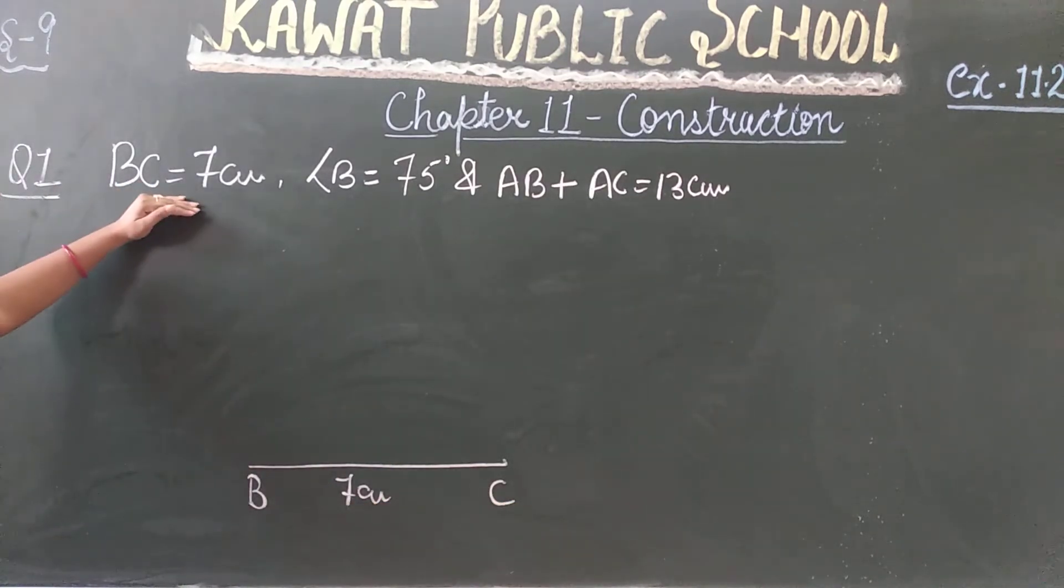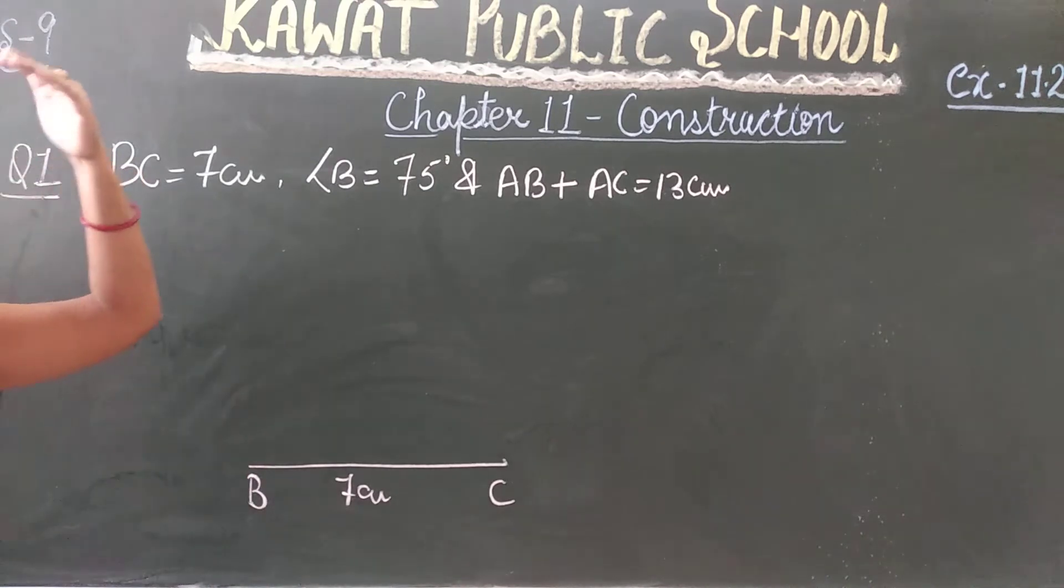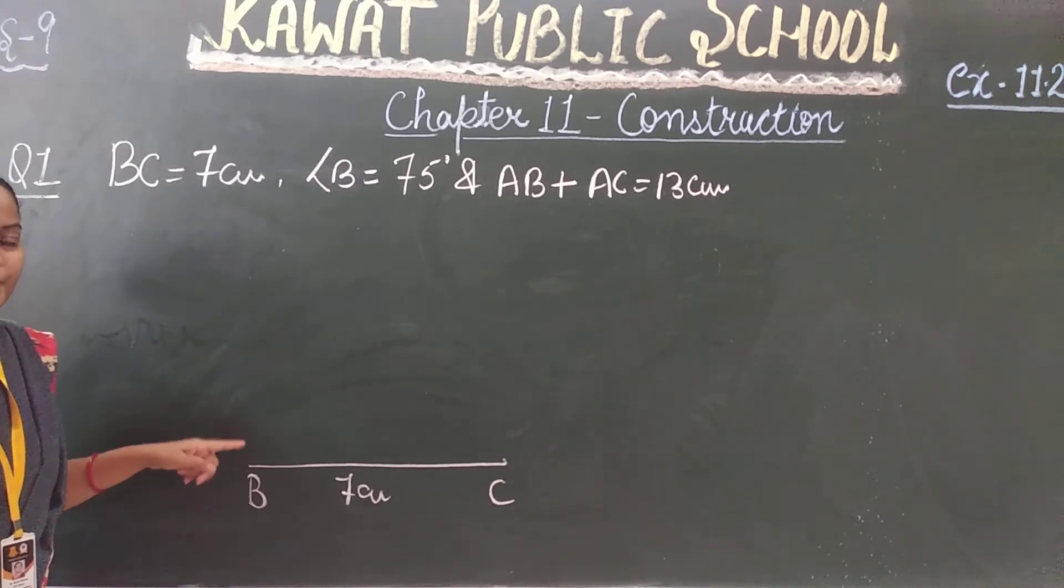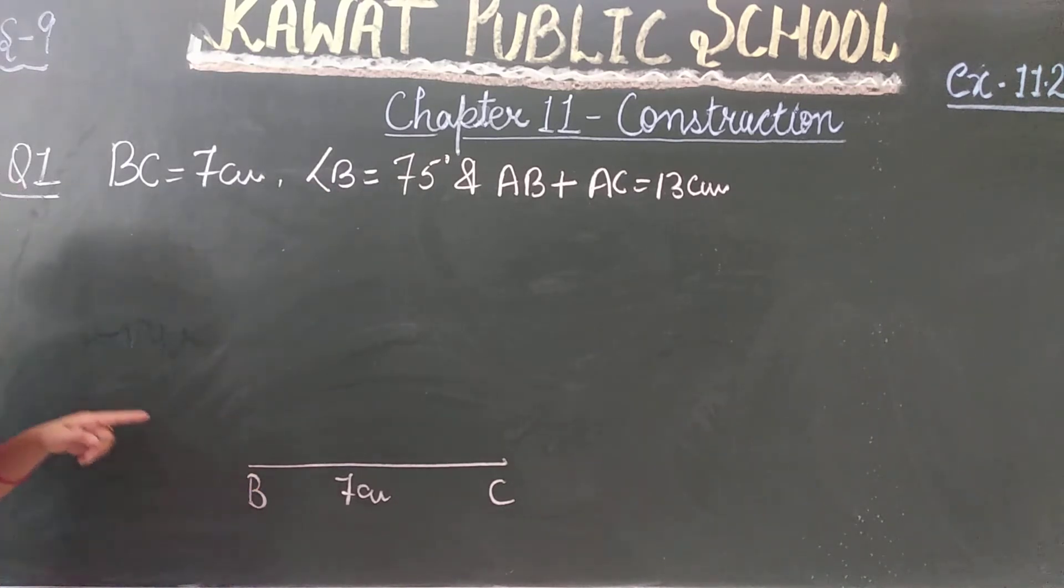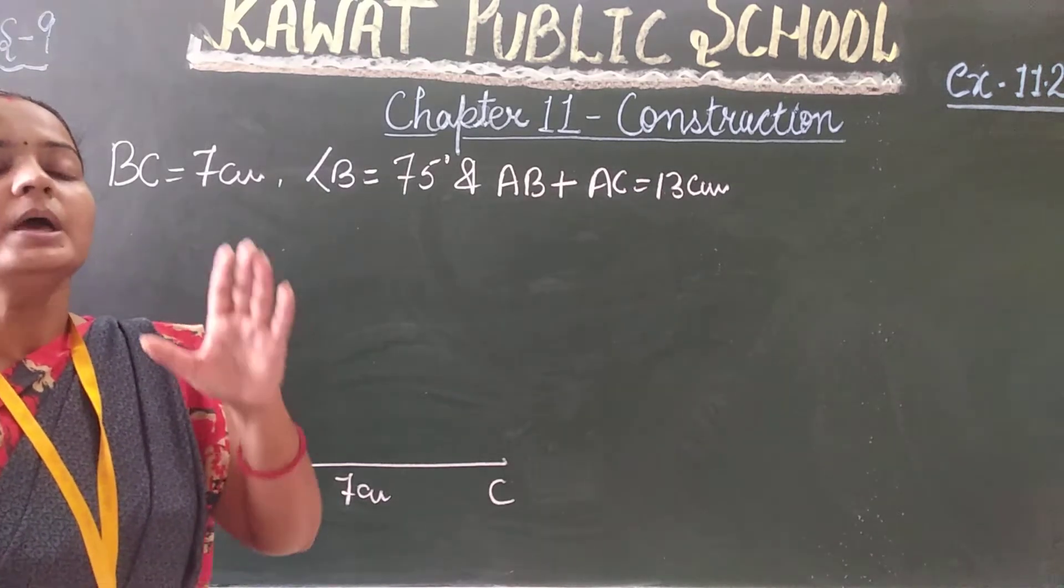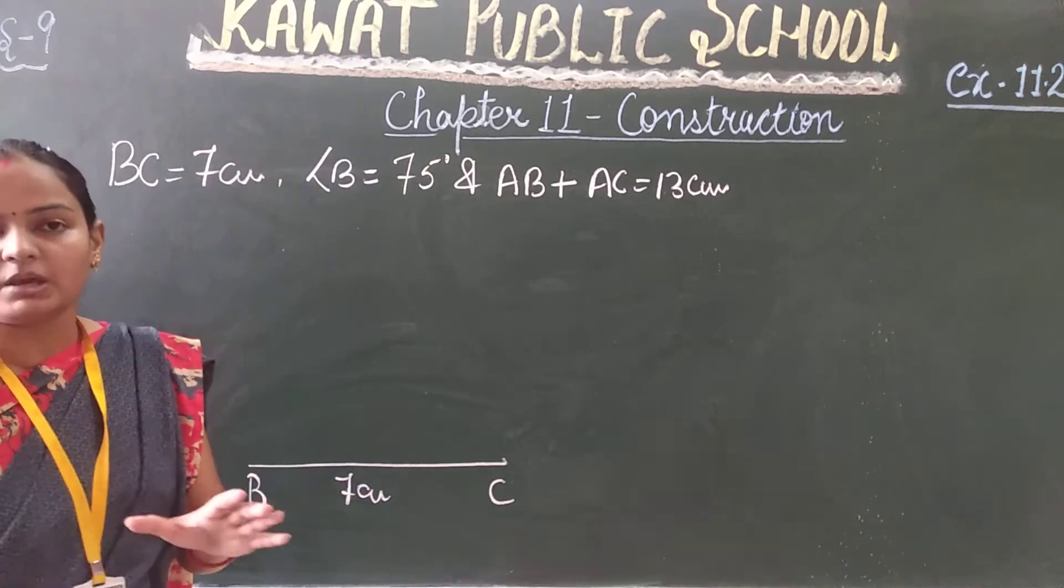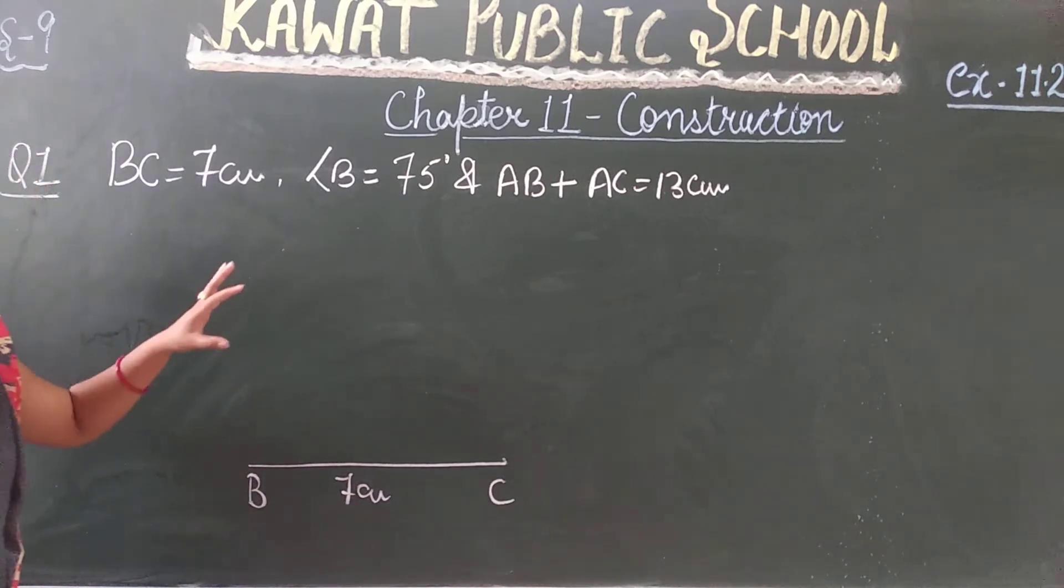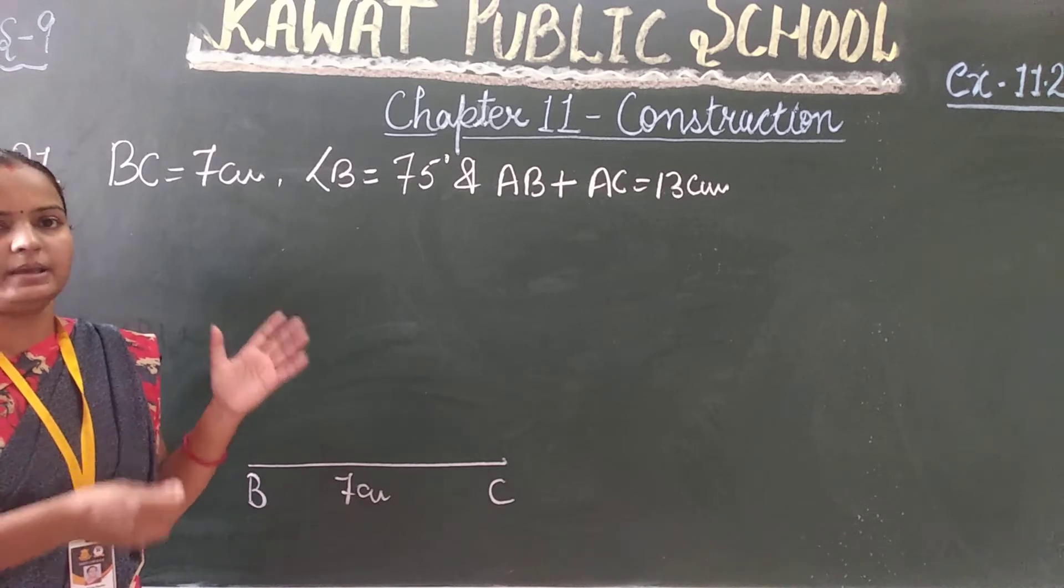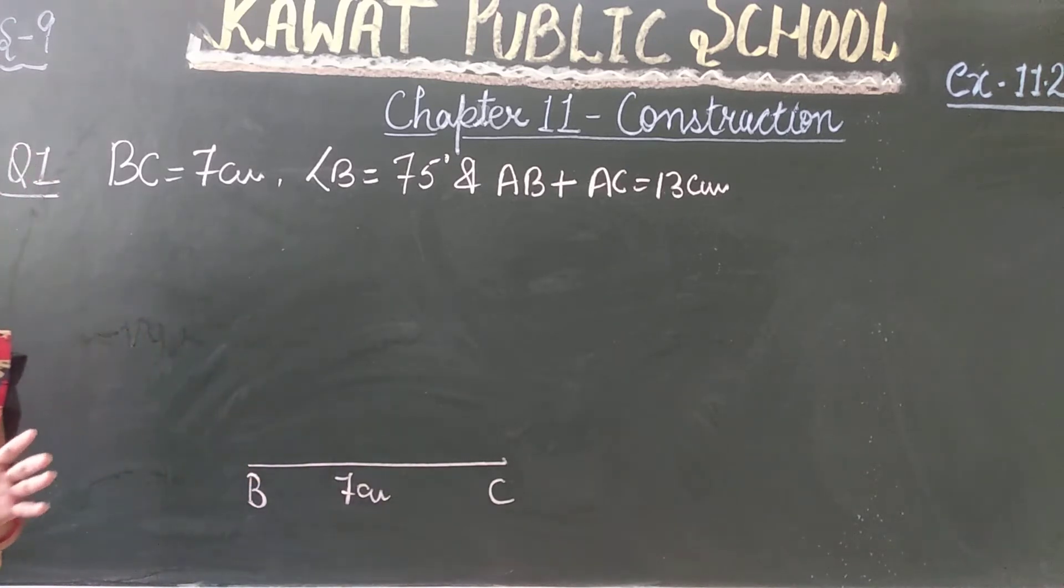Now you have to draw the base angle. The base angle to draw, how much? Angle B is to draw. At this point you have to draw 75 degrees. Now 75 degrees you have to draw with the help of compass and pencil.